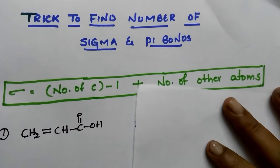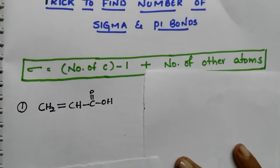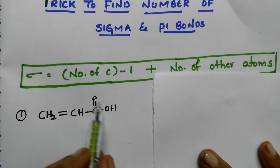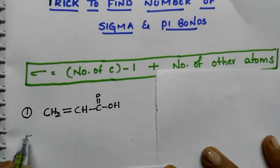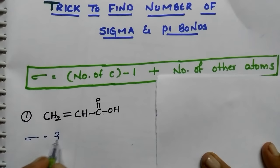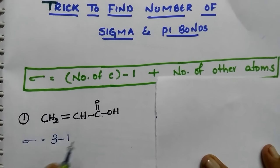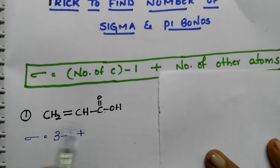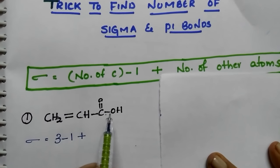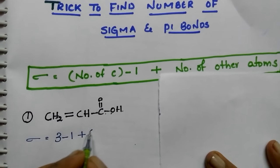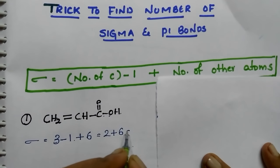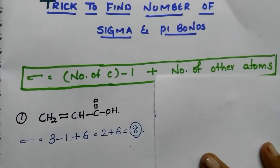Try this example: CH2 double bond CH, C double bond OH. Number of carbon atoms are 3. So according to our formula, 3 minus 1 plus number of other atoms — there are 6 other atoms. So 3 minus 1 is 2, plus 6. Total number of sigma bonds are 8.